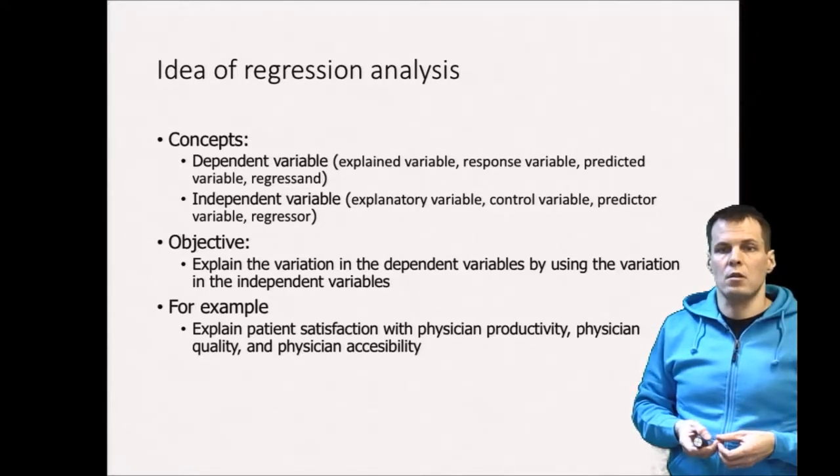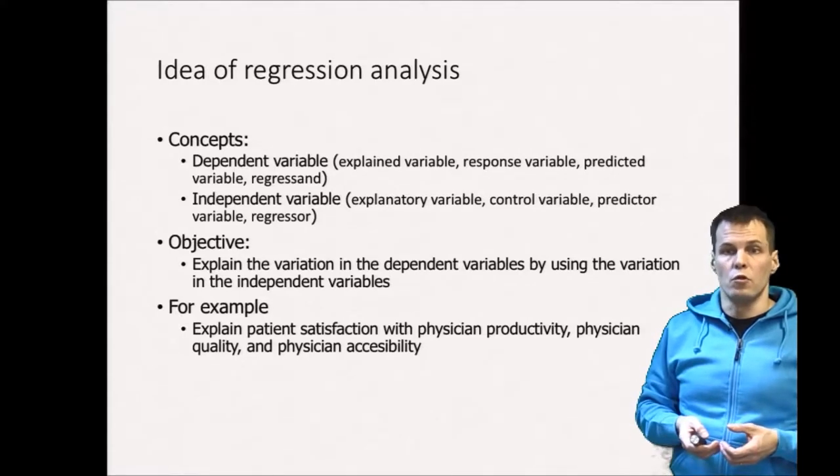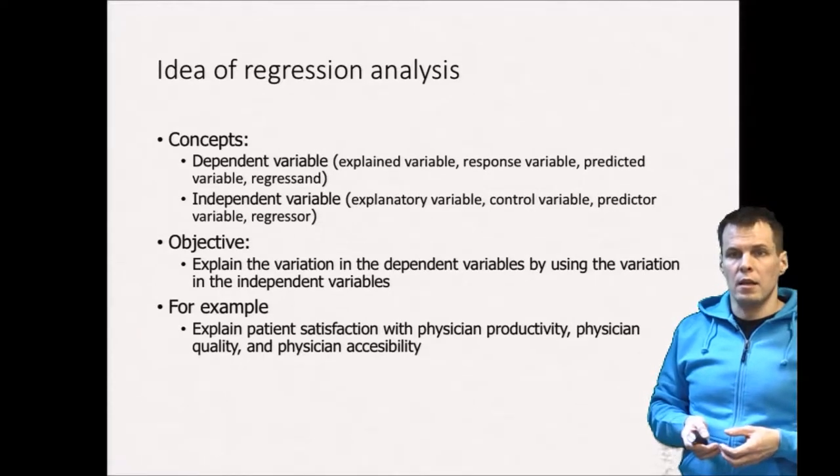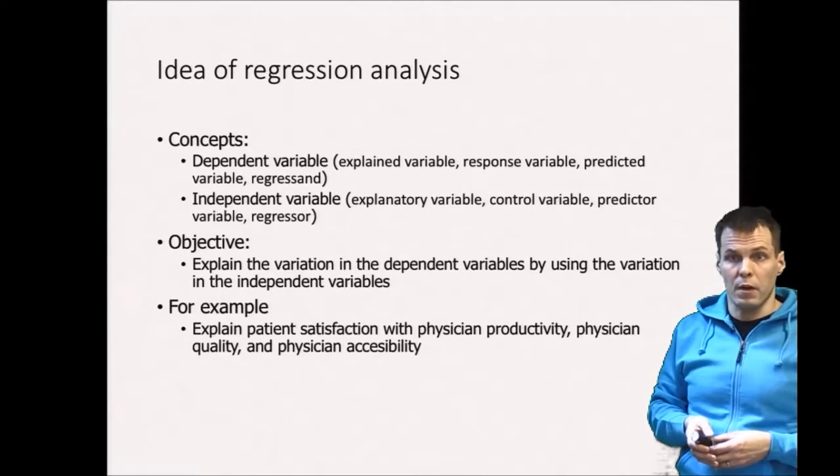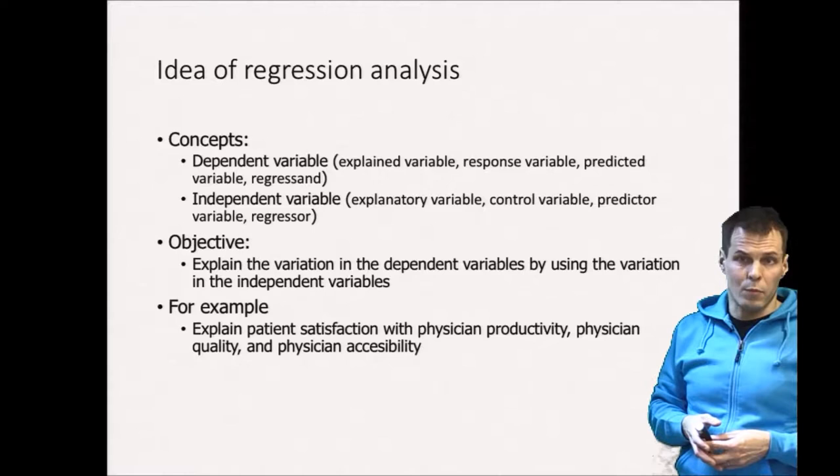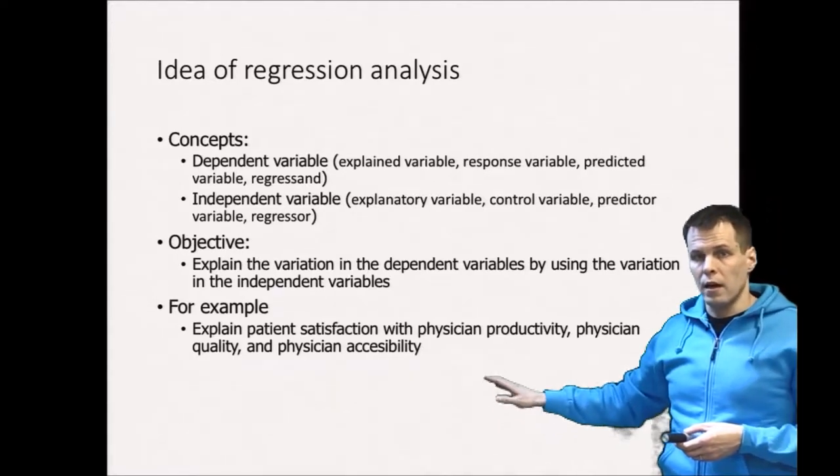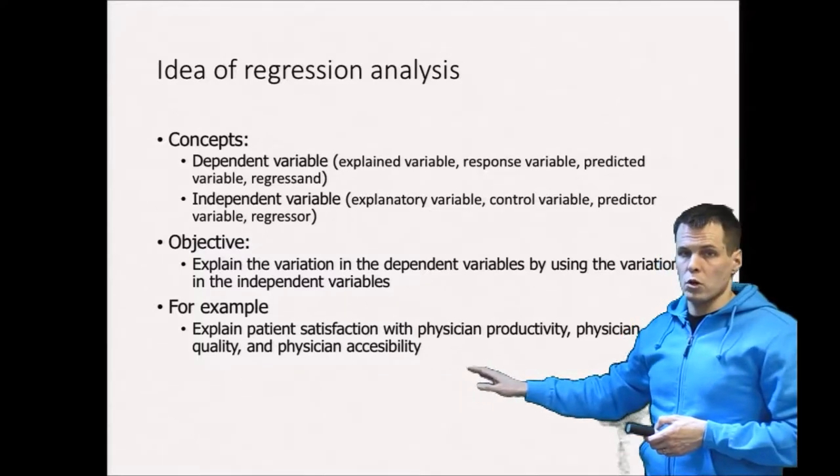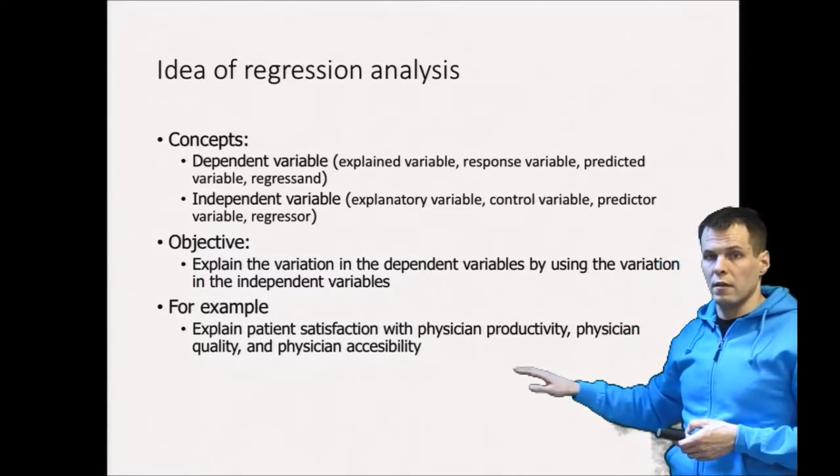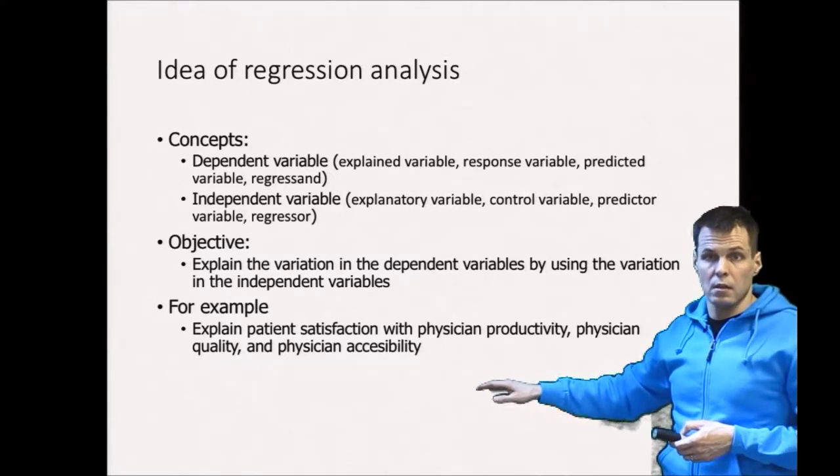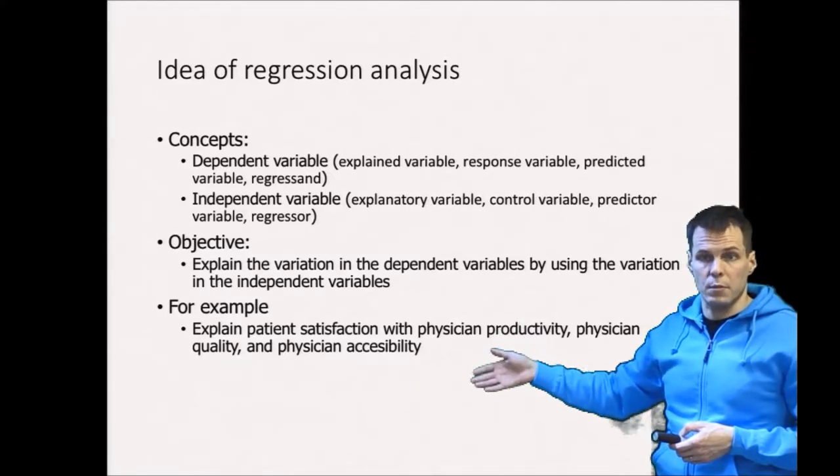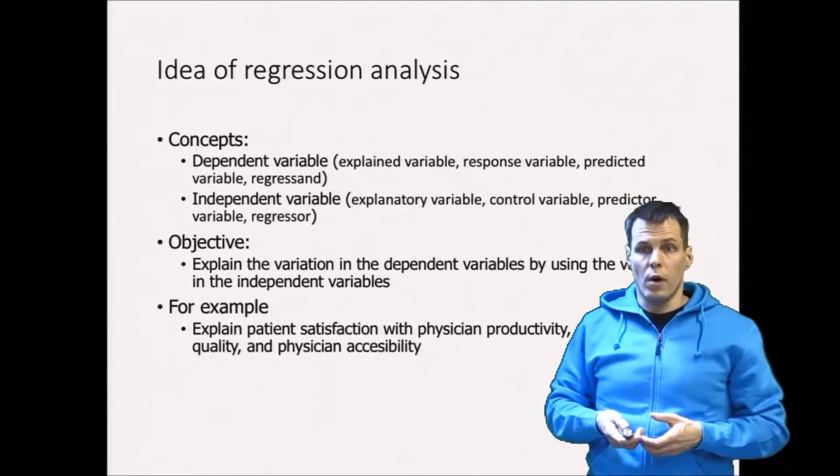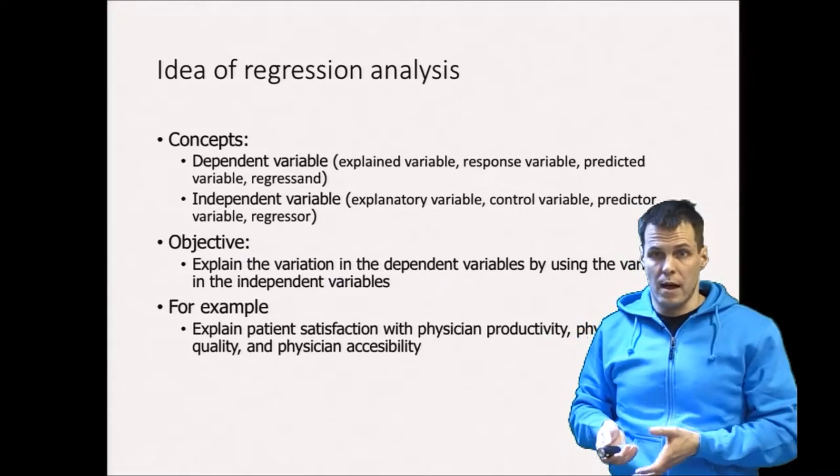Regression analysis allows us to control for alternate explanations for an observed correlation. In the case of the paper by Heckman, they explained patient satisfaction scores with for example physician productivity, physician quality and physician accessibility. So you have one thing that you explain with multiple things to see which one of those multiple potential explanatory variables actually matters.